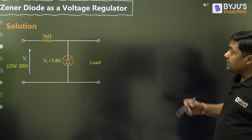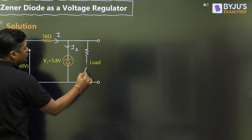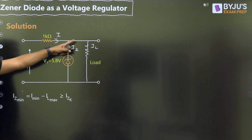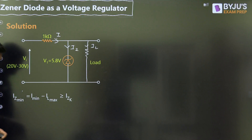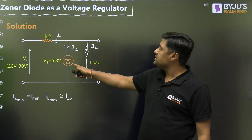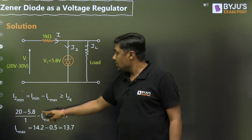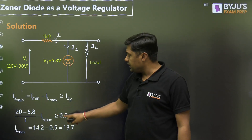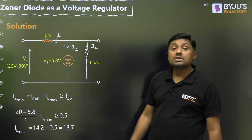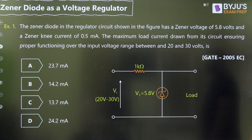Using the first formula: Iz_min = I_min − IL_max ≥ Izk. Here I_min = (Vi_min − Vz) / R = (20 − 5.8) / 1kΩ = 14.2 mA. So: 14.2 mA − IL_max ≥ 0.5 mA. Therefore IL_max = 14.2 − 0.5 = 13.7 mA. The answer is 13.7 mA, which is option C.